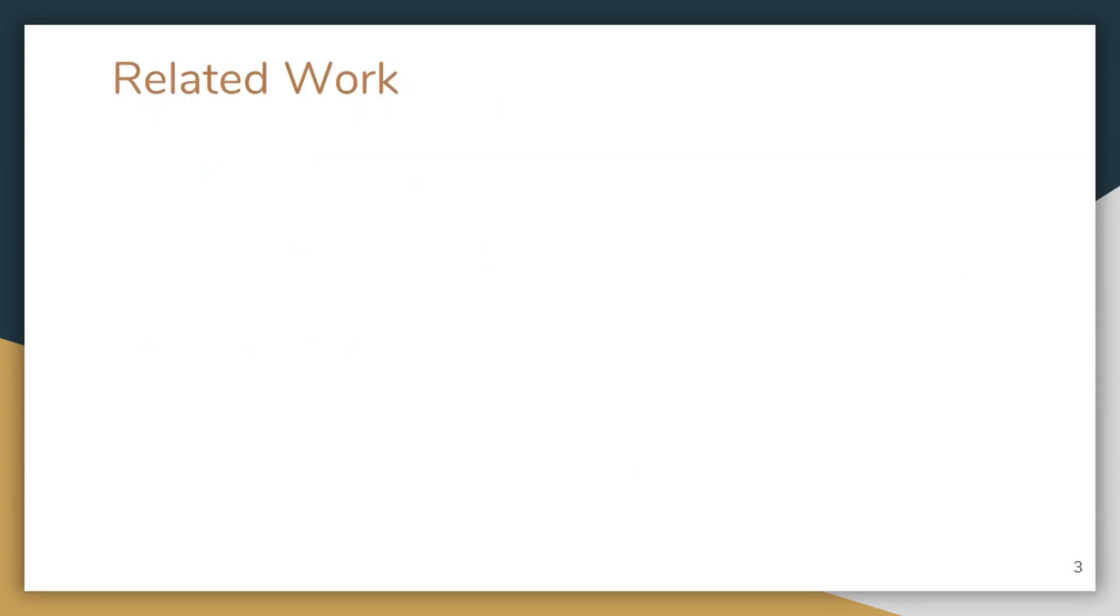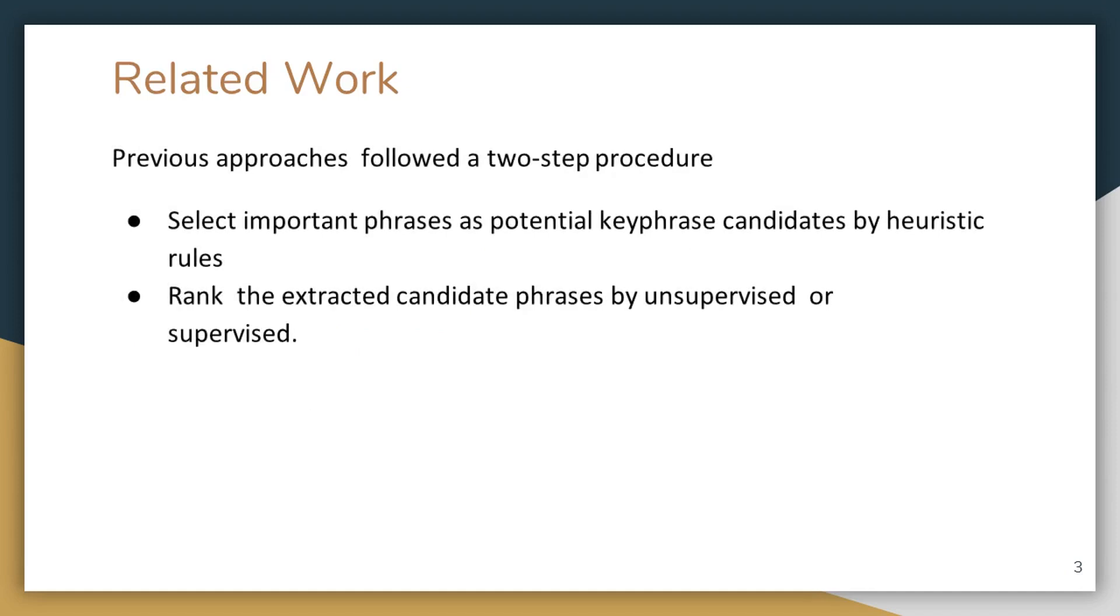Let me give you an overview of work in this domain. Previous approaches used to follow a two-step procedure where in the first step they select important phrases as potential keyphrase candidates, and then rank them using some unsupervised or supervised metrics. For unsupervised, they score them based on informativeness of words, graph-based measures, etc.